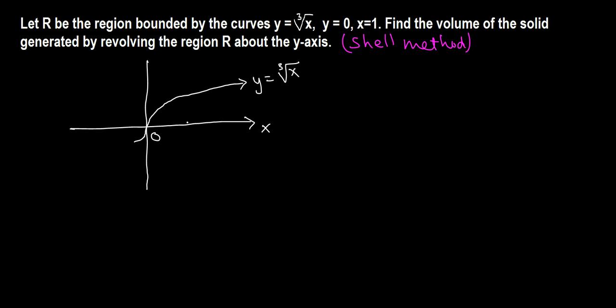x equals 1 is a vertical line passing through 1. So the region we are interested in is bounded by x equals 1, y equals 0 (the x-axis), and cube root of x.